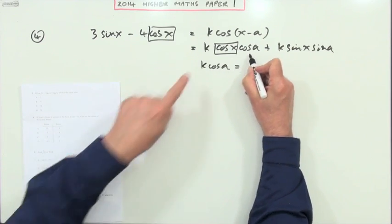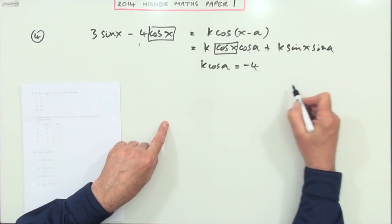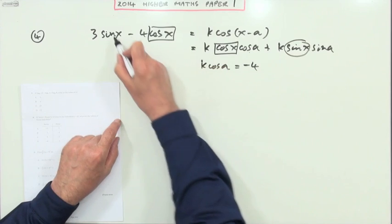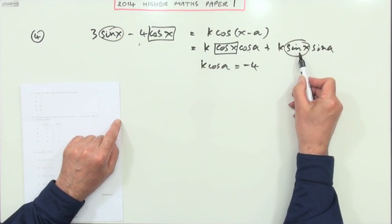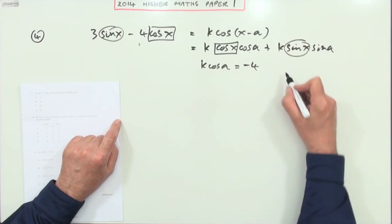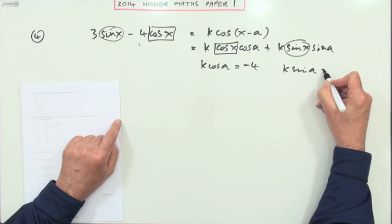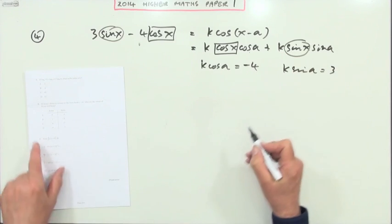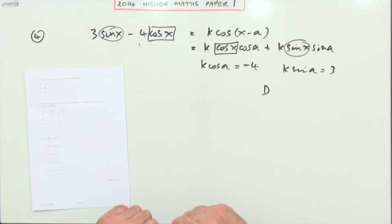So I've got k cos a equals -4, and then check the sine with the sine. The sine x has got k sin a. The sine x has got 3, so k sin a should be 3. So I'm looking for -4, 3, and it is indeed D.